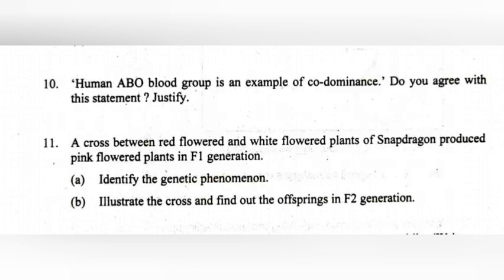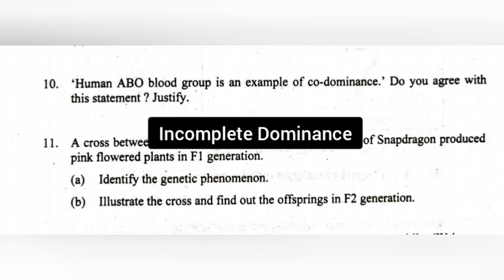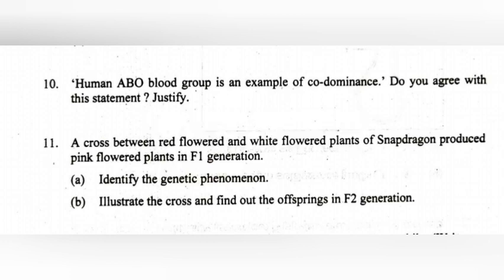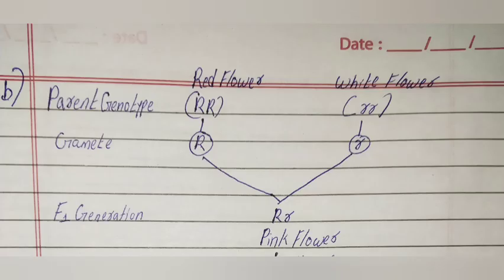11. A cross between red-flowered and white-flowered plants of snapdragon produced pink-flowered plants in the F1 generation. A. Identify the genetic phenomenon. Answer: Incomplete dominance. B. Illustrate the cross and find out the offspring in the F2 generation.